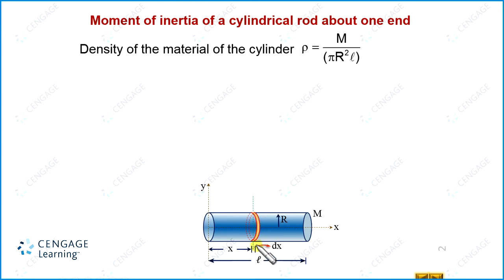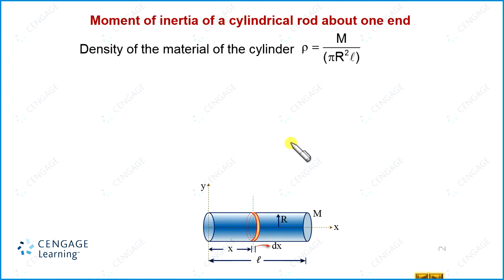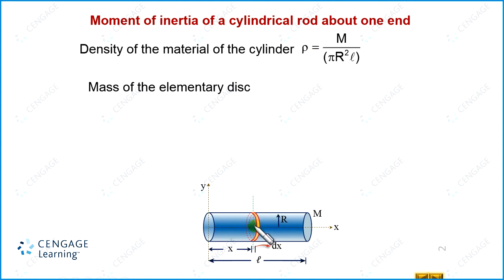The volume of this elemental disc equals πr²·dx. We are considering this disc as a very small elemental cylinder. The mass of this disc equals the volume of the disc multiplied by the density of the material of the cylinder. So dm equals ρ·πr²·dx.